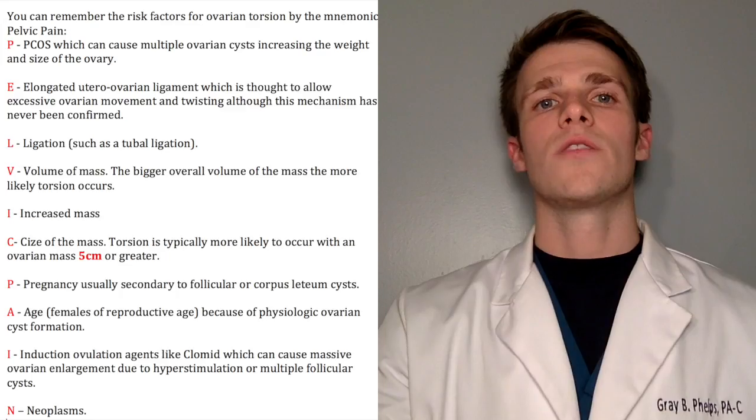If ovarian torsion is not recognized and treated urgently, it can result in loss of ovarian function, infertility, necrosis, peritonitis, hemorrhage, and rarely sepsis. The primary risk factors for ovarian torsion are going to be any disease process that predisposes the patient to form an ovarian mass. However, torsion can occur in the absence of a mass, which we will talk about shortly.